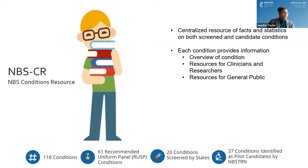There are also 20 conditions being screened by certain state newborn screening programs, as well as 37 conditions identified as candidates by NBS-TRN. This resource was built to provide information to all types of NBS stakeholders, including the NBS programs themselves, researchers, clinicians, patients, parents, family, and advocates. The condition is divided into different sections: a condition overview, links for clinicians and researchers, and resources for the general public.